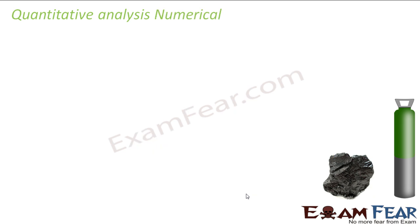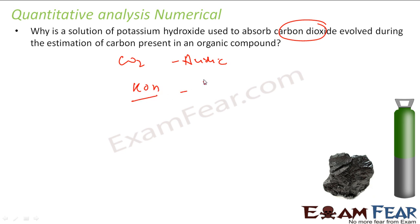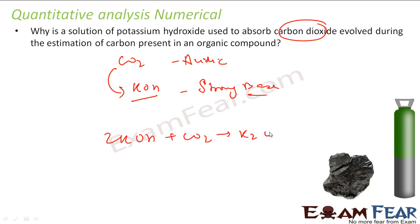Let's take some numericals on this. The question is: why is potassium hydroxide used to absorb carbon dioxide that is evolved during estimation? We don't want to lose carbon dioxide because it will give a correct estimate. Since carbon dioxide is acidic, we take potassium hydroxide — it's a very strong base — and then you have an acid-base reaction. So all the CO₂ produced is absorbed: 2KOH + CO₂ → K₂CO₃ + H₂O. That is why we use this strong base to absorb all the carbon dioxide evolved during the experiment.